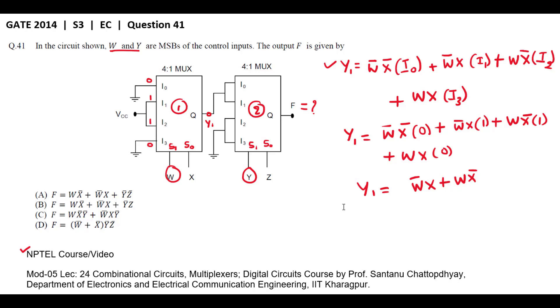Similarly, the output equation of the second multiplexer is Y1 equals to W bar X plus W X bar, from the first stage, plus Y Z bar. Here I2 is logic 0, and I3 input is also logic 0.